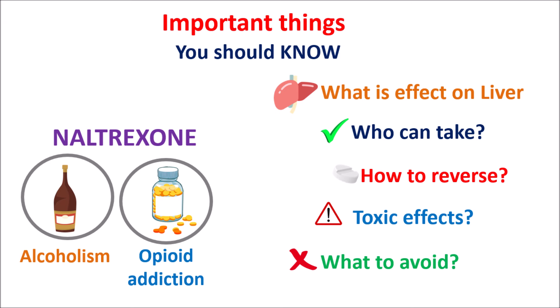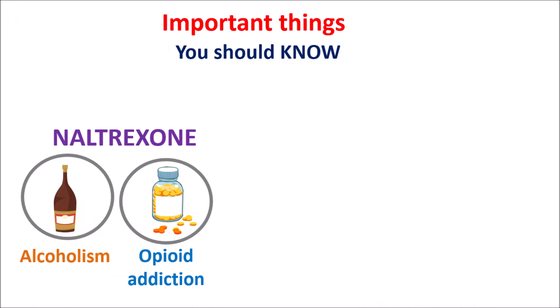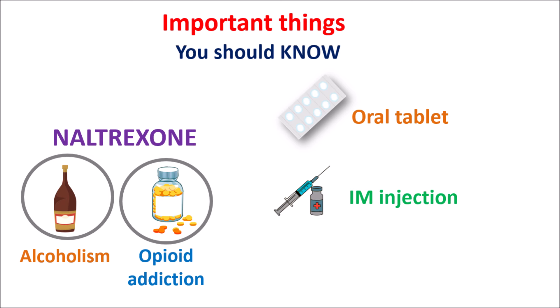Today in this video we are going to discuss 7 important things that you should know before using Naltrexone. Naltrexone is available in two dose forms: one is the tablet and the second one is intramuscular injection. Intramuscular injection should be carefully given because the drug is directly administered into the blood circulation and any excess of this dose may lead to a few toxic effects.